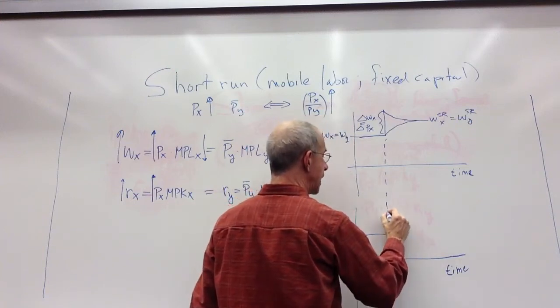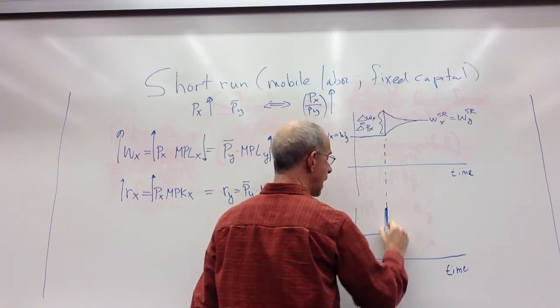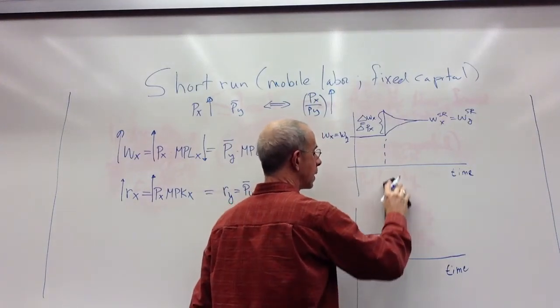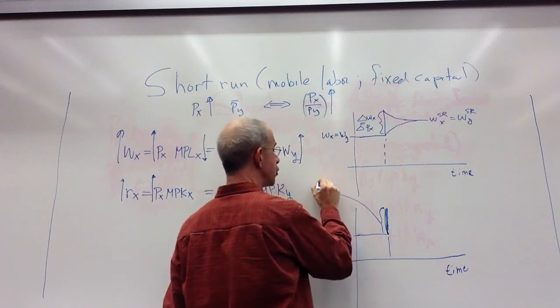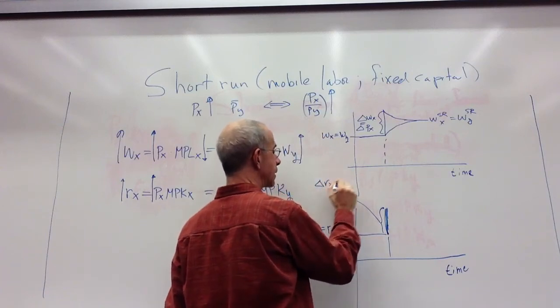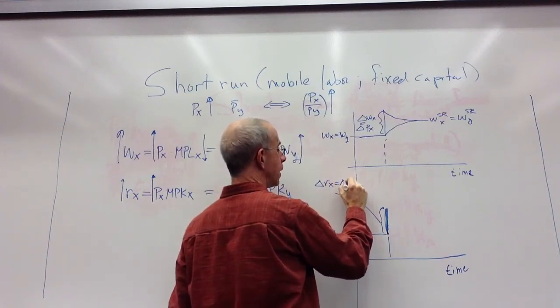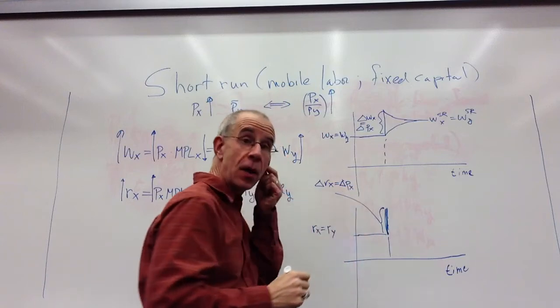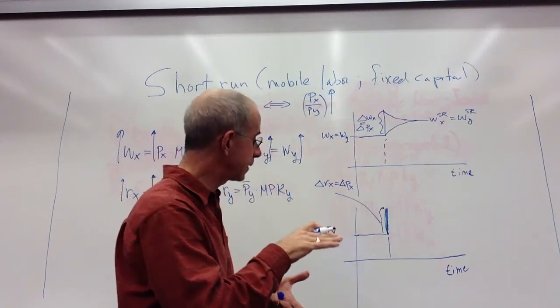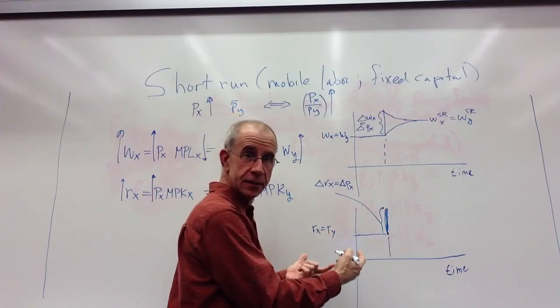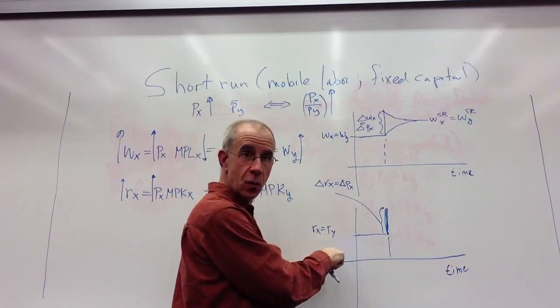The payment to capital, the change in the payment to capital in X is going to go up originally by the price rise in X. That's the very short run effect. Payment to capital stays the same in industry Y.